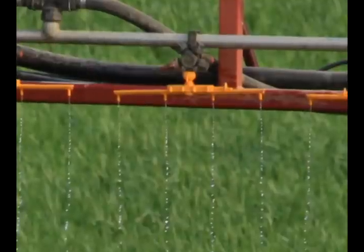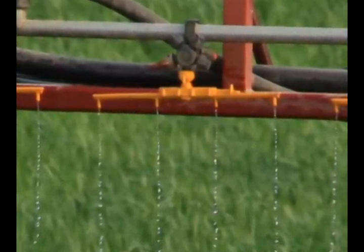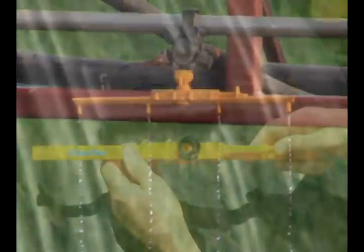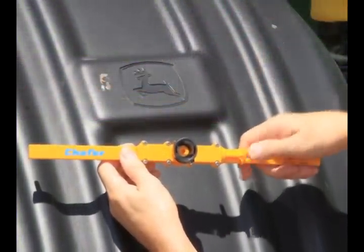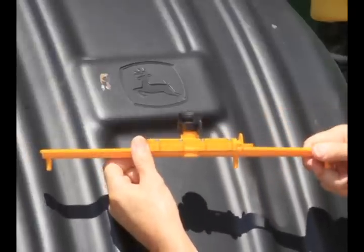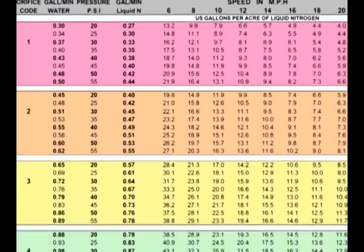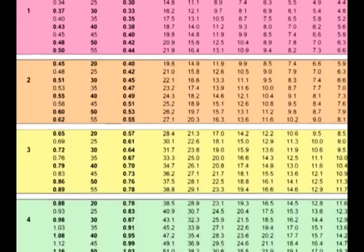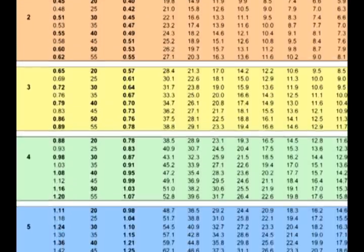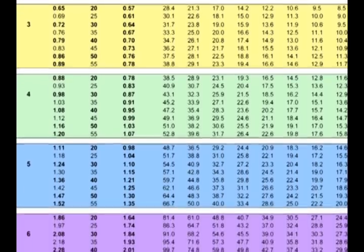This is the new Schaefer multi-rate stream bar. It's stronger than previous stream bar designs, plus it's designed to speed up changes in application rate by incorporating a sliding tab with six different orifices. This 20-inch bar, which is used for 20-inch spacing on the sprayer, can deliver from 8 to over 50 gallons per acre, assuming a 10 miles per hour forward speed on a high-capacity sprayer. Specific rate speed charts are available on request.